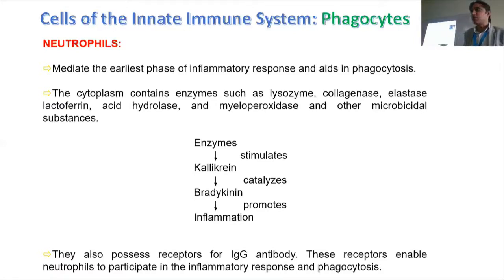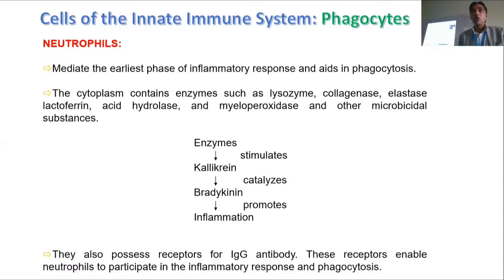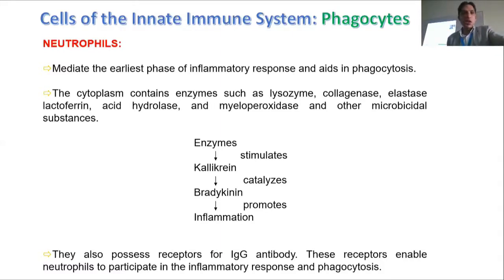Since neutrophils are designed to eat bad things, they carry enzymes like lysozymes, collagenase, elastase, lactoferrin, and hydrolases — enzymes capable of breaking down proteins and fats present in the pathogen. These are killer molecules, killer enzymes. They can not only kill bad things but also promote inflammation.